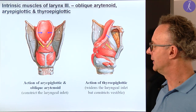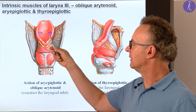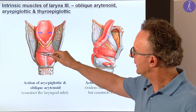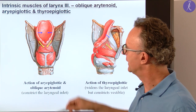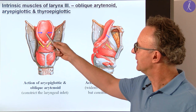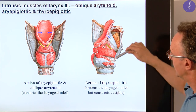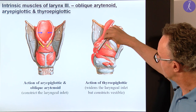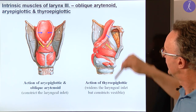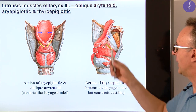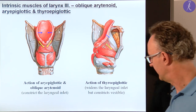The third group of intrinsic muscles functionally regulates the size of the laryngeal inlet. The oblique part of the arytenoid muscle continues upward as the aryepiglottic muscle. This is able to constrict the laryngeal inlet, as shown by the blue arrows. Its antagonist is another muscle — the upper part of the thyroarytenoid, called the thyroepiglottic muscle — which widens the laryngeal inlet, while at the same time the vestibule, the uppermost part of the laryngeal cavity, becomes narrower.